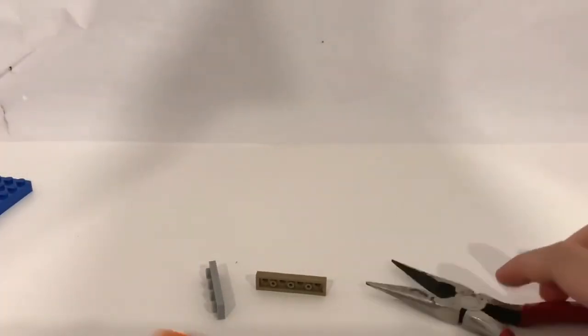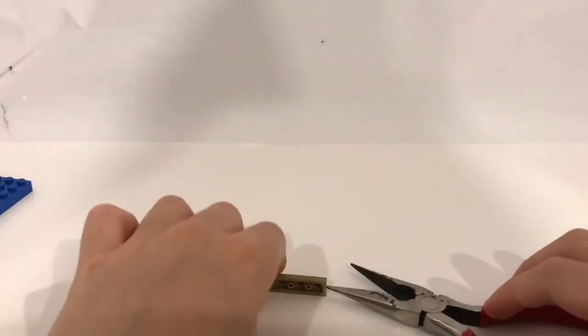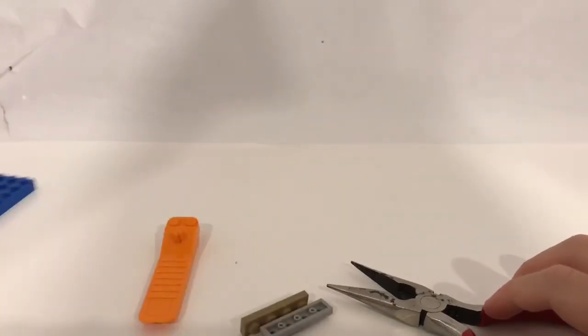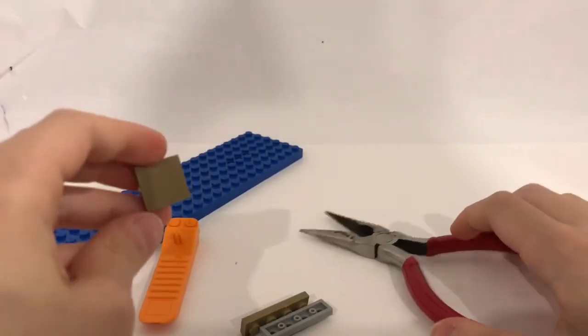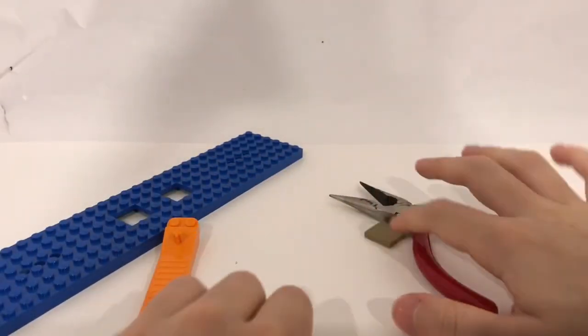So out of all, which one won? The needle nose pliers won with the tiles, so it gets a point.